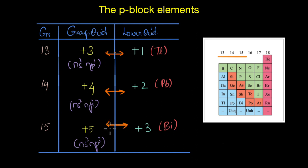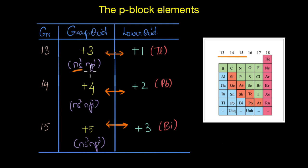So the question is: where does this difference of two units come from? The two refers to the two ns electrons that are somehow not participating in bonding. In all of these groups, the lower oxidation state corresponds to the number of electrons in the p orbital. This reluctance of the ns electrons to participate in bonding is what we attribute to the inert pair effect.